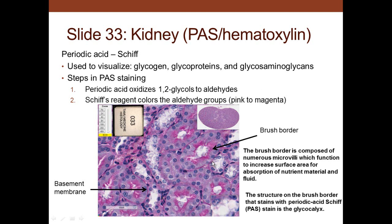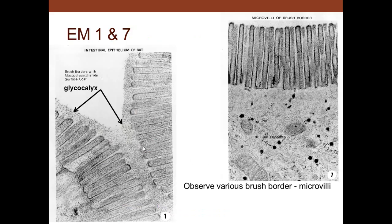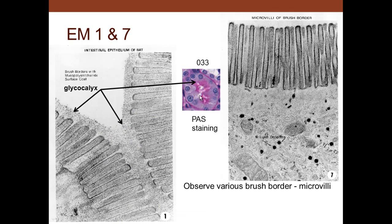In the kidney's proximal tubule, cells have a brush border composed of numerous microvilli of uniform size, which increases surface area for absorption of nutrients — in the case of the kidney, absorption of proteins and other things needed back in the bloodstream. The brush border stains with periodic acid-Schiff because of the glycocalyx — a fuzzy coat on the microvilli. It's actually the sugars of the glycocalyx that cause the pinkish color, not the microvilli themselves.